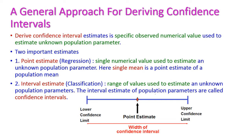To derive the confidence interval, an estimate is a specified observed numerical value which is used to estimate the unknown population parameter. First we have to observe the numerical value which is used to estimate the population parameter. We need to estimate two important things: first one is point estimate and second one is interval estimate. The point estimate is nothing but a single numerical value which is used to estimate an unknown population parameter.